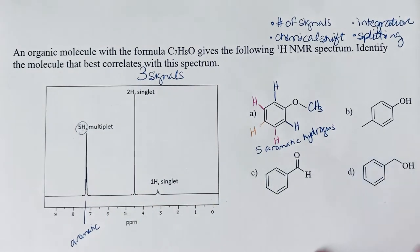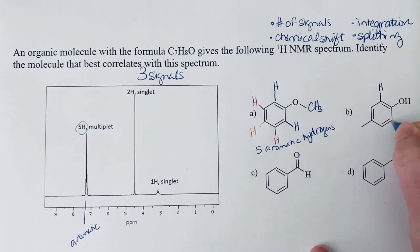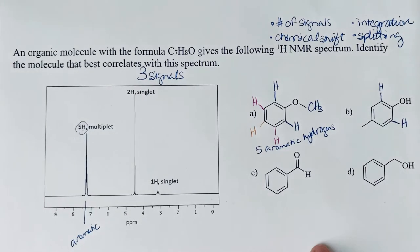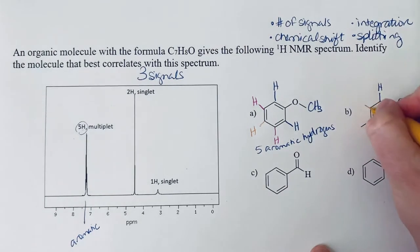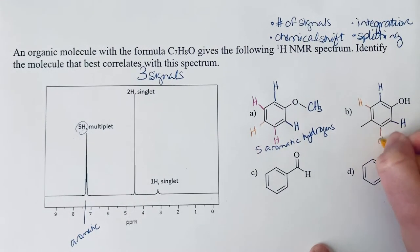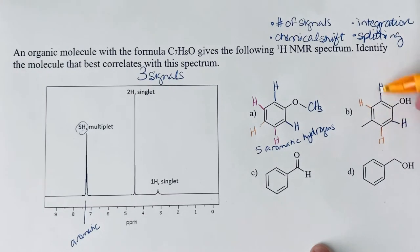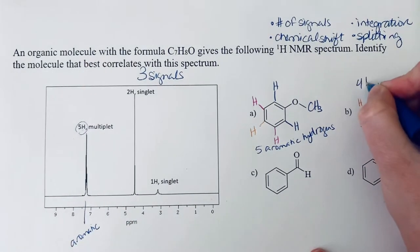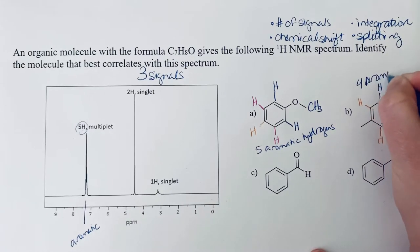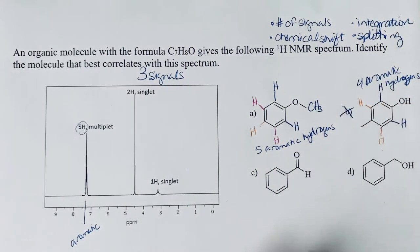Because B has these two aromatic hydrogens and these two. So I would see two distinct signals in the aromatic region with B. And moreover, I would see a total, a sum total from those two signals of four hydrogens. So four aromatic hydrogens. So definitely not looking at B.